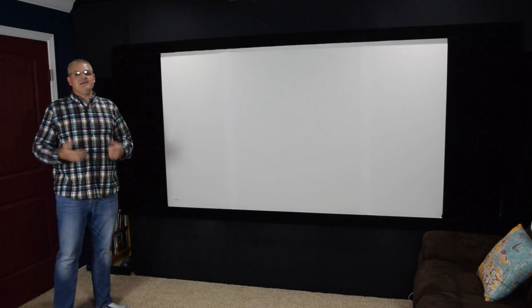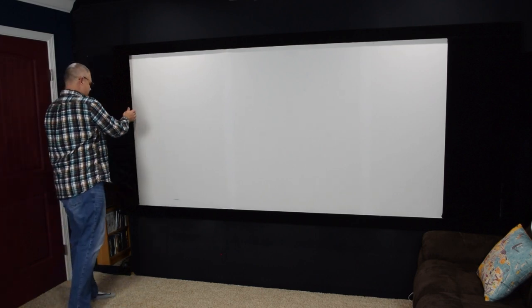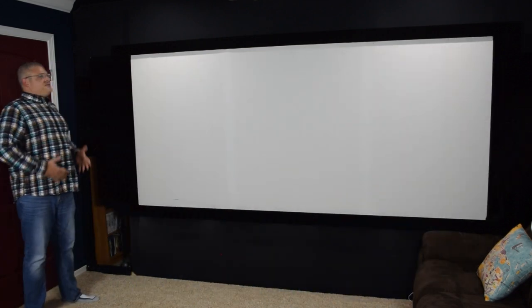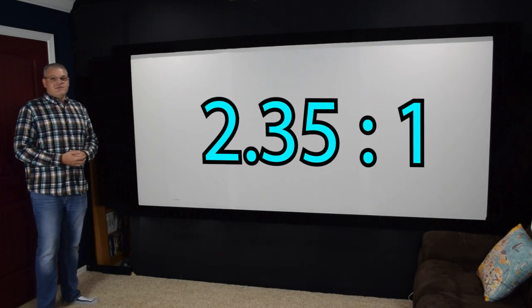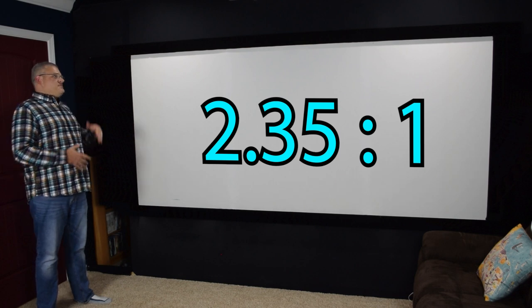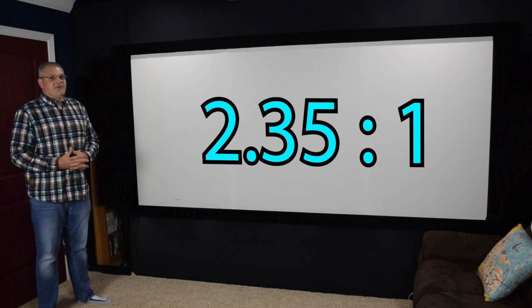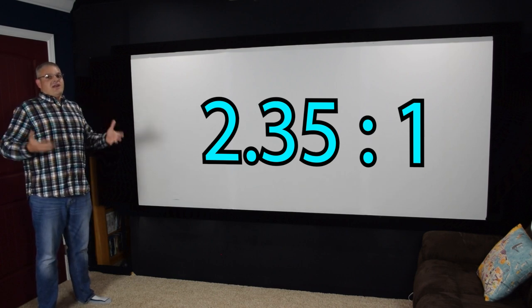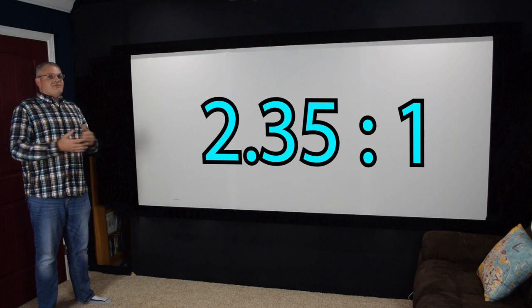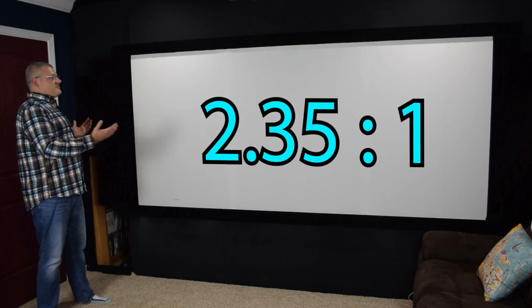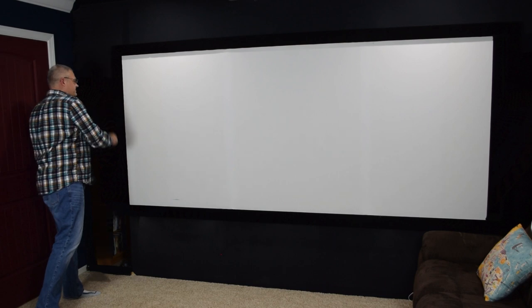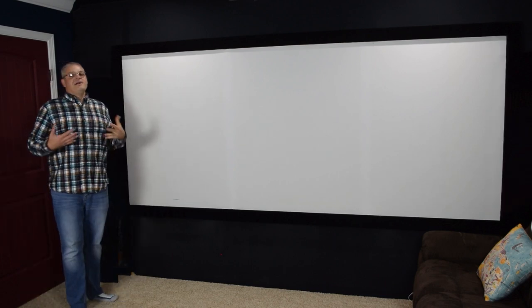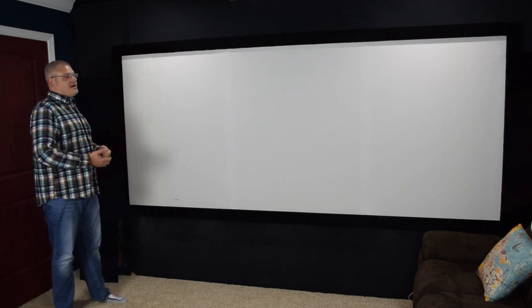So what is a constant image height screen and how does this solve our problems? Well, this is a constant image height screen. This is a fixed 2.35 to 1 home theater screen that has masking panels on the side, so that if I'm watching 16 by 9 content, I close the panels down and I have a nicely framed 16 by 9 image. If I'm watching 2.35 to 1 content, I open them up — or sometimes I just take them off completely — and have the widest possible image I can. And this is a 10-foot-wide screen.